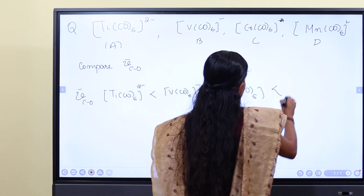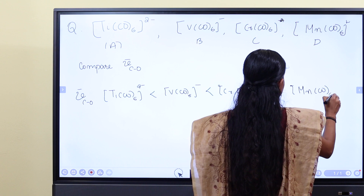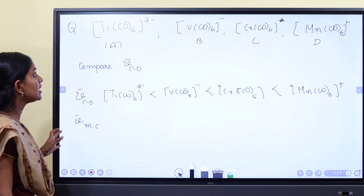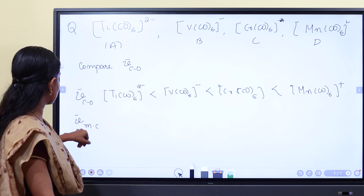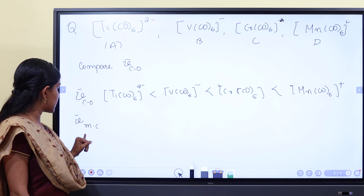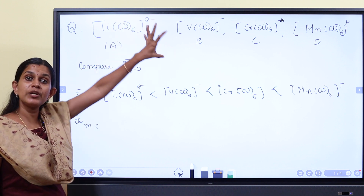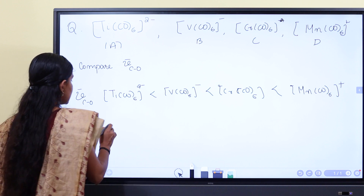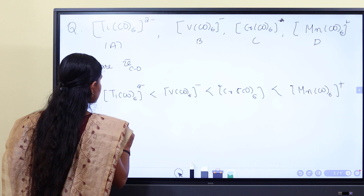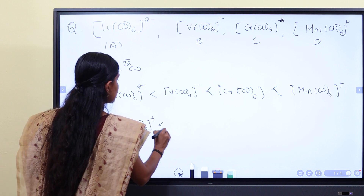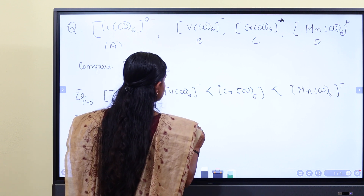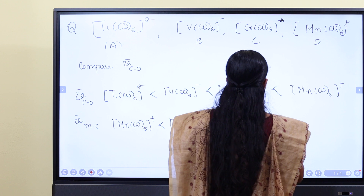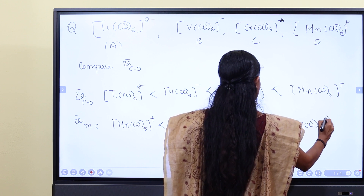We arrange the series: MnCO6(+), CrCO6, VCO6(-), TiCO6(2-). As we go down, the M-C bond changes and the CO stretching frequency changes accordingly.